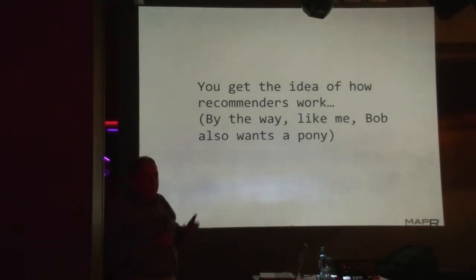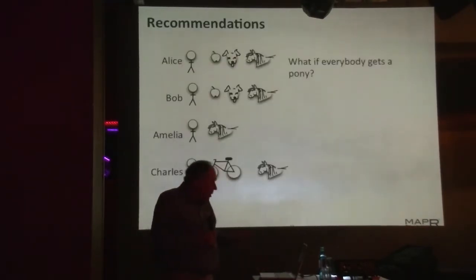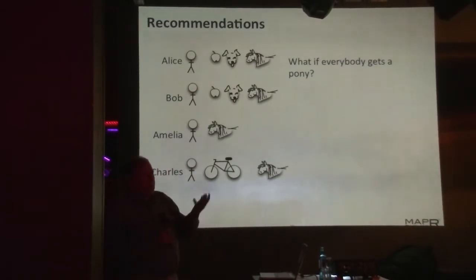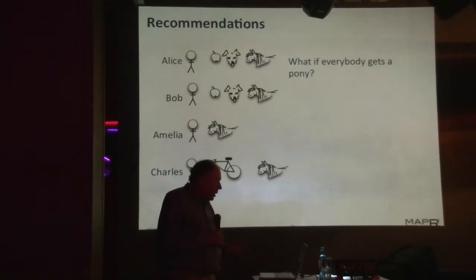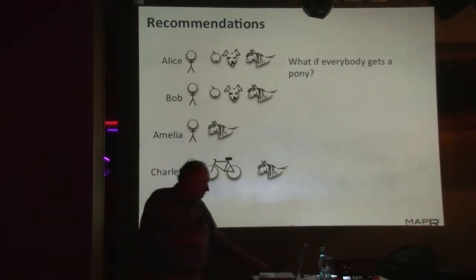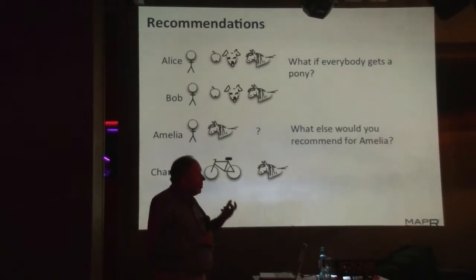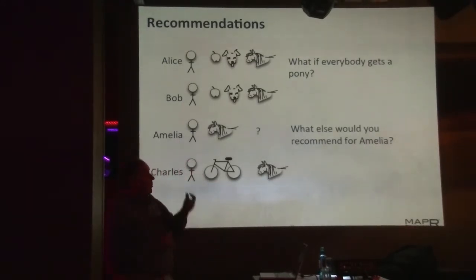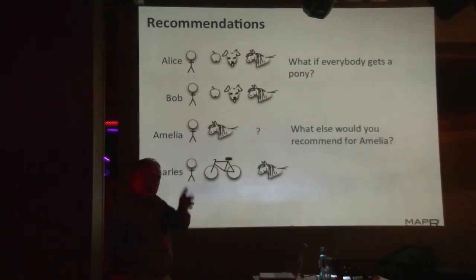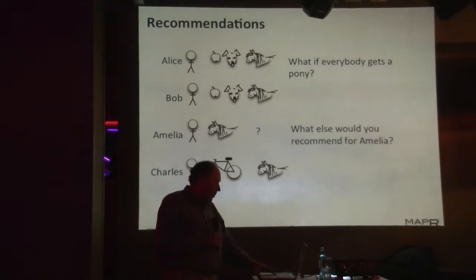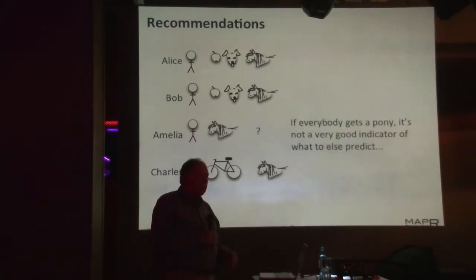Bob wants a pony as well — in fact, everybody wants a pony. Everybody wanted a pony when they were little and they probably still secretly do. And what if everybody gets a pony? If Amelia comes in and she gets a pony, what else are we going to recommend her? The fact that she got a pony is completely uninformative. Before we had a weak signal from the apple for Bob. But now we have essentially no signal from the pony, because everybody gets it. These are the two things we have to worry about with recommendations.